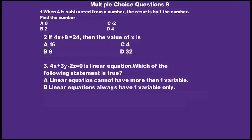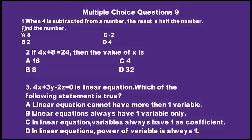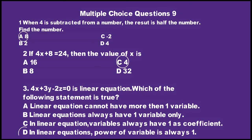A: Linear equations cannot have more than one variable. B: Linear equations always have one variable only. C: Linear equations always have one as coefficient. D: In linear equations, power of variable is always 1. D is the right option. In linear equations, power of variable is always equal to 1.